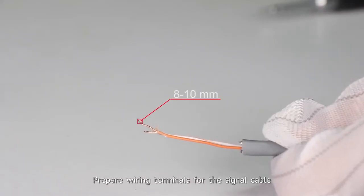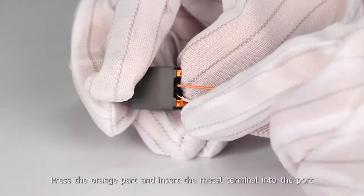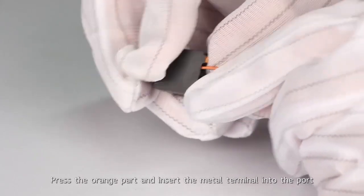Prepare wiring terminals for the signal cable. Press the orange part and insert the metal terminal into the port.